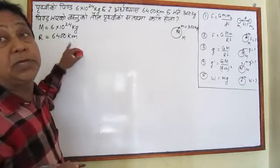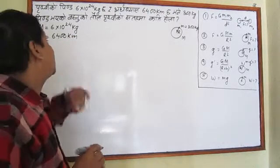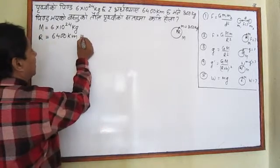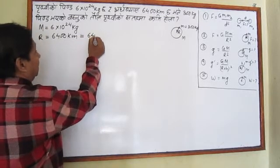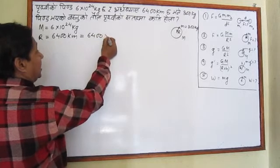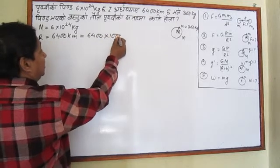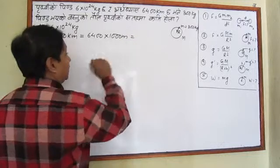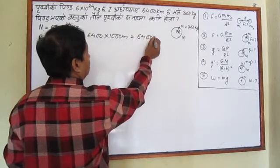If I convert kilometer to meter, I multiply by a thousand. So 1 kilometer equals a thousand meters. I spend a thousand times of meter. If I put this quantity, 6.4 is equal to 6400, so the radius in meters becomes 6.4 into 10 to the power 6.